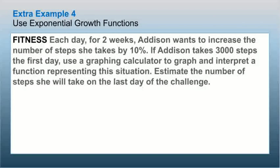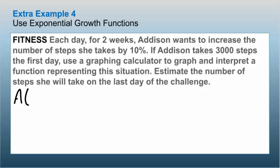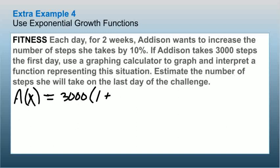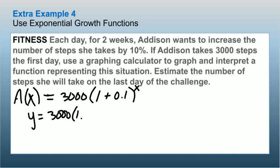Next problem: each day for two weeks, Addison wants to increase her steps by 10%. She takes 3,000 steps the first day. We write A(x) = 3000 × (1 + 0.1)^x, which simplifies to y = 3000 × 1.1^x.